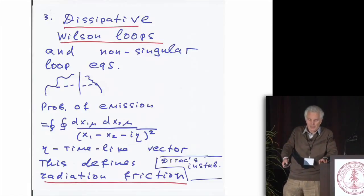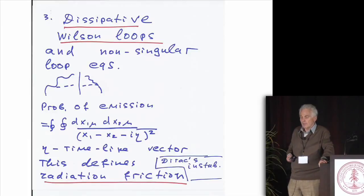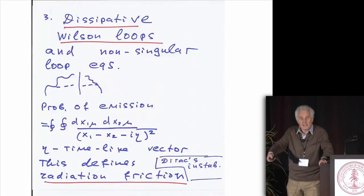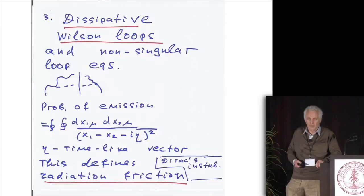Here I wrote the expression for the second order correction on the Wilson loop. In the ordinary Wilson loop, it's the same expression, but the I eta is not there, and you get plus I zero. From here, you can derive the classical Dirac equation for the dissipation, for the radiation friction.